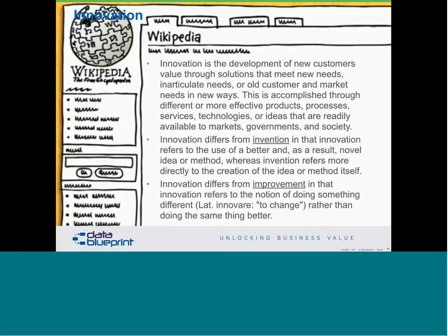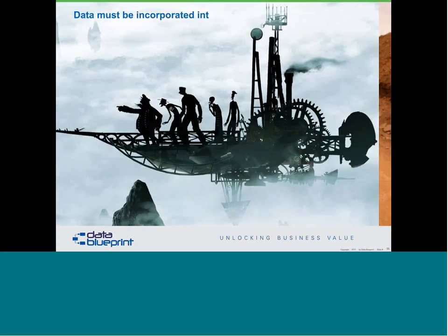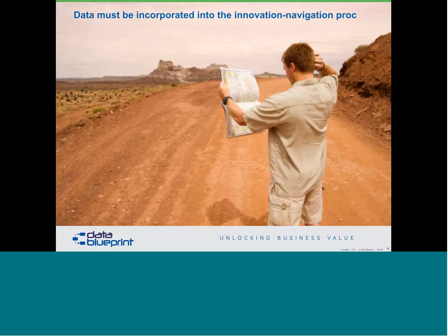Let's take a look at innovation. Innovation is different from invention in that innovation refers to a better and, as a result, a novel idea. And innovation also differs from improvement in that innovation refers to the notion of doing something that is different — changing as opposed to doing the same things better. So we're going to do different things, and we're going to do it different ways. That puts you out in a place that not many people are really comfortable — it's kind of a wild landscape out there.